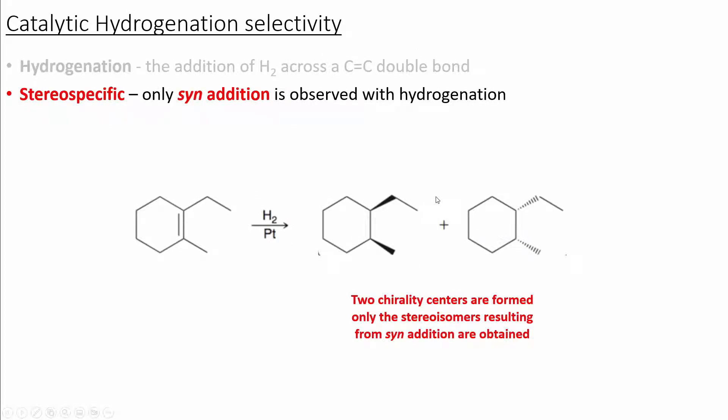This reaction will be stereospecific. This means that the two hydrogen molecules are approaching from the same side of the double bond. We will get syn addition, which will create the two cis stereoisomers of the product.